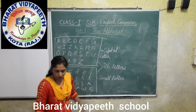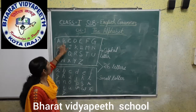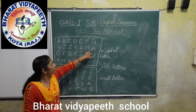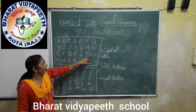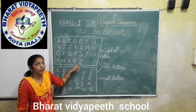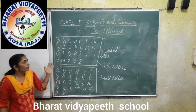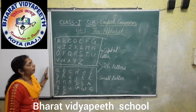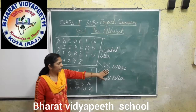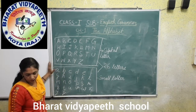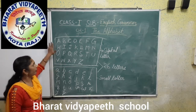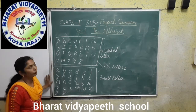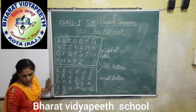How many alphabets are there? So we count: 1, 2, 3, 4, 5, 6, 7, 8, 9, 10, 11, 12, 13, 14, 15, 16, 17, 18, 19, 20, 21, 22, 23, 24, 25, 26. There are 26 alphabets. We write each letter in a capital form and we write each letter in a small form. There are two forms: capital form and small form.